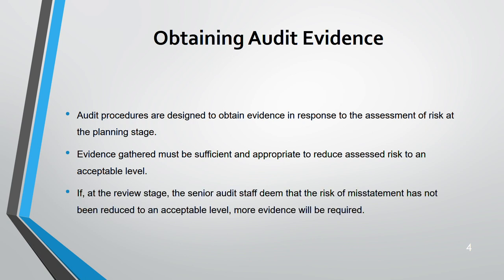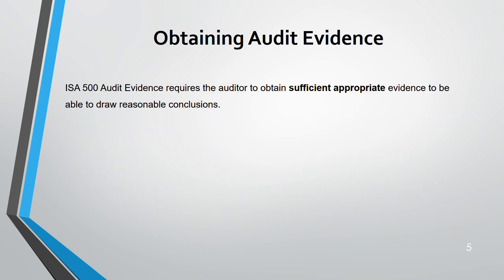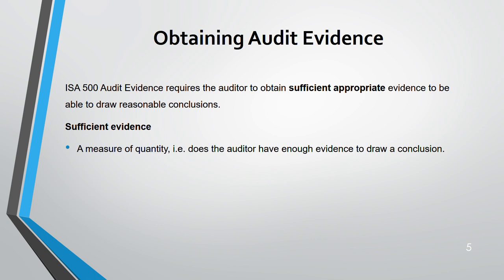At the review stage, if senior audit staff deem that the risk of misstatement was not reduced to an acceptable level, you have to collect more evidence. Sufficient means quantity — you have to decide what amount of evidence is enough. Whatever evidence you are collecting should be enough to help you draw a reasonable conclusion. Until you are able to draw a reasonable conclusion, you have to keep on collecting evidence — that is the meaning of sufficient.